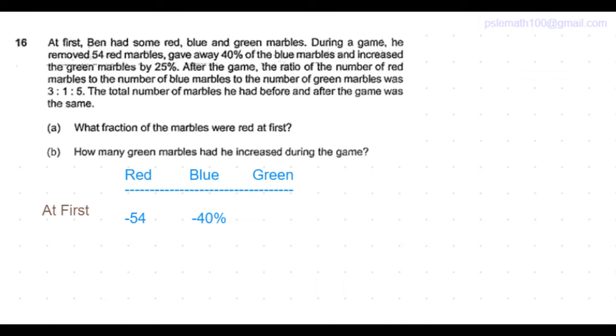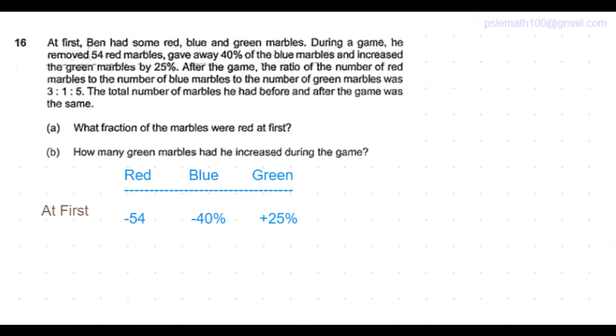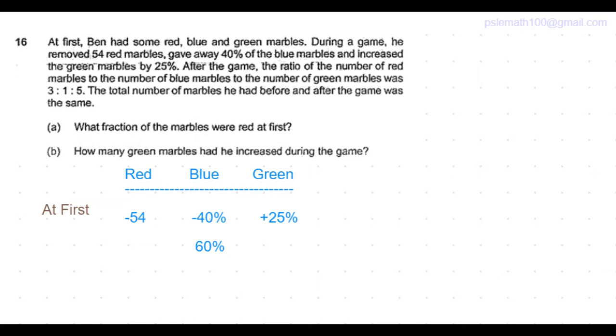gave away 40% of the blue marbles and increased his green marbles by 25%. So for the blue marbles, if 40% were removed, the remaining would be 60%. Similarly, for the green marbles, initially he had 100% and added another 25%, which means it would have become 125%. So in the end,